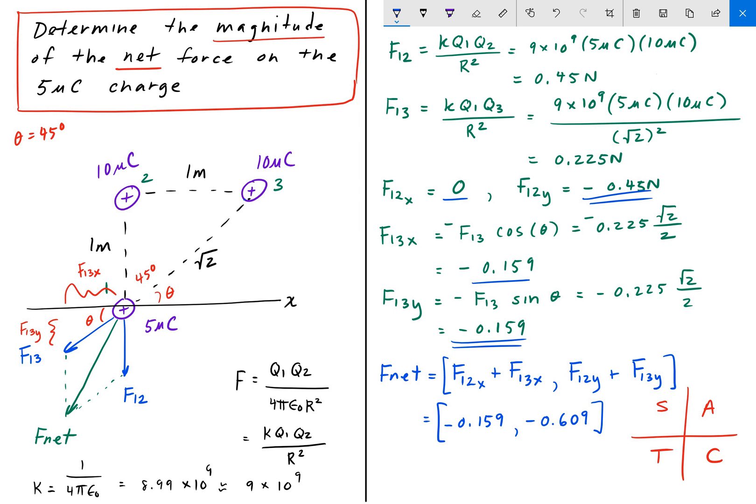And then to find the magnitude, so that's the x component and the y component added up only using vector notation. And to find F net, finally, the magnitude is just these two components squared and square rooted. Right, so this is going to be negative 0.159 squared plus negative 0.609 squared. And this whole thing square rooted. And then when we do that, we finally get our answer. 0.63 newtons.